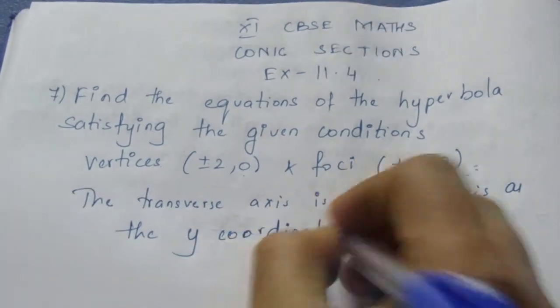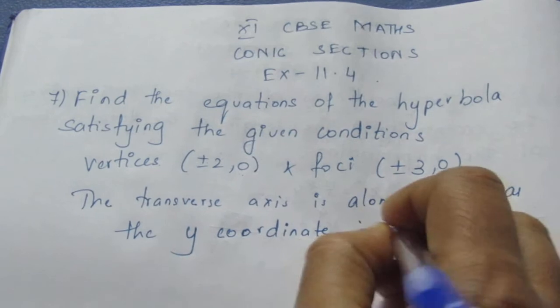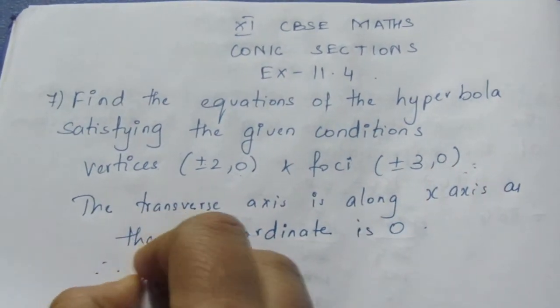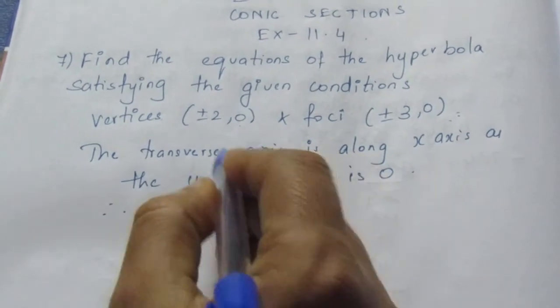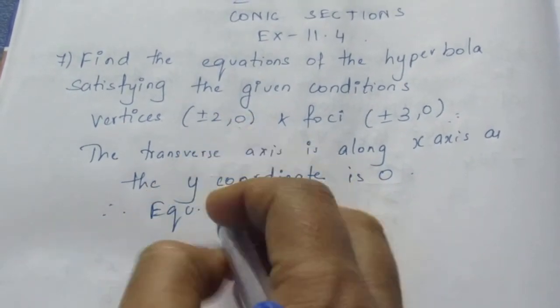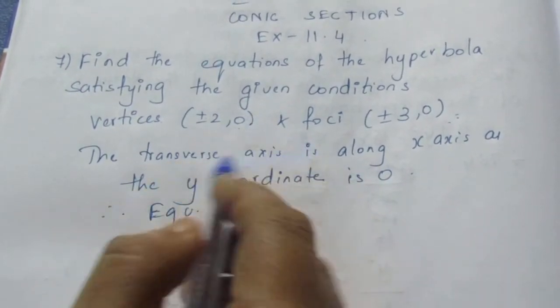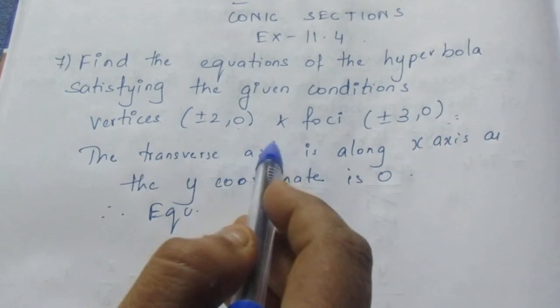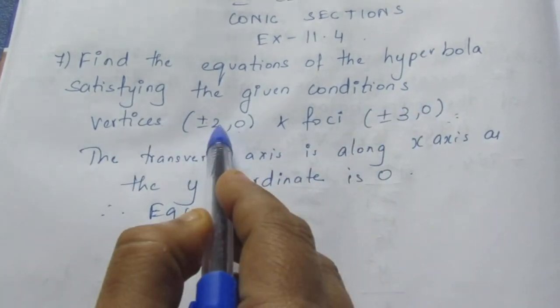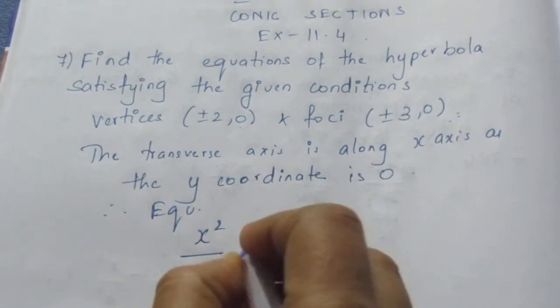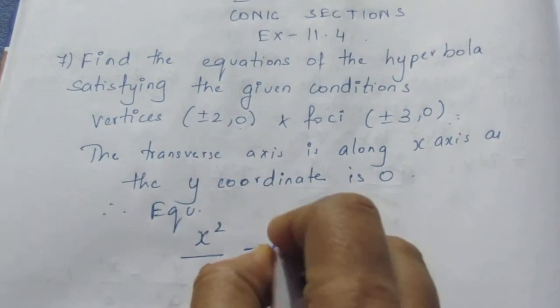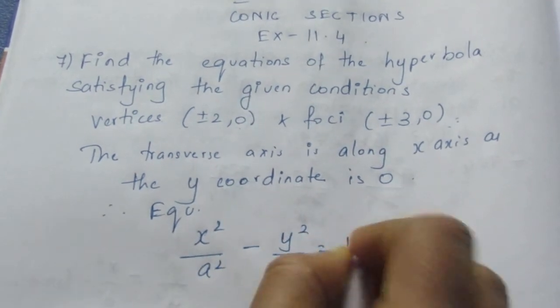So your equation will be in the form - if you can see the y-coordinate is 0, the dominant axis, that is the major axis called the transverse axis in hyperbola, is on the x-axis. So your general equation will be x²/a² - y²/b² = 1.